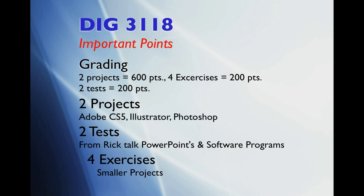Quickly, we'll go over some basic points here. The grading for this summer is based on two major projects — that's going to be 600 points — four smaller projects or exercises worth together 200 points, and then two relatively short tests worth another 200 points, for a total of 1,000 points. You can divide that by 10 and you pretty much have the hundred-point overall system.